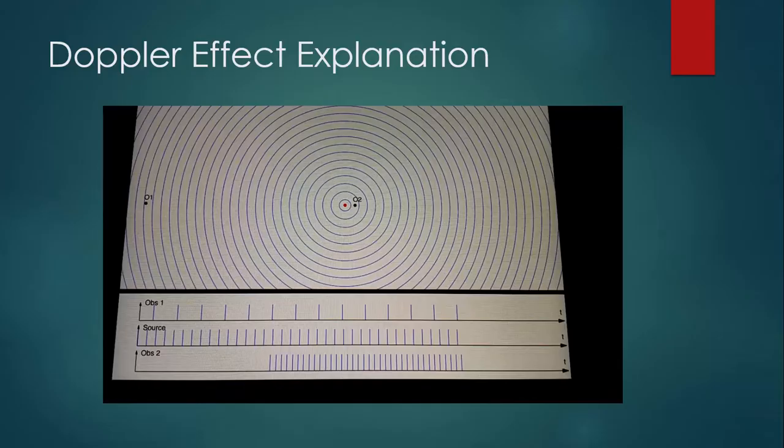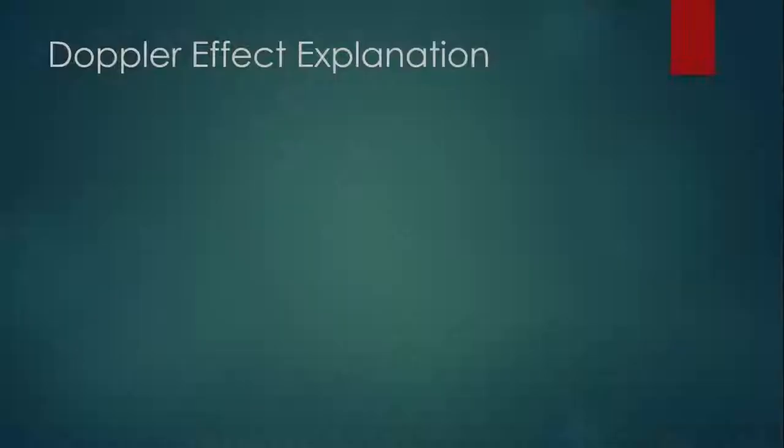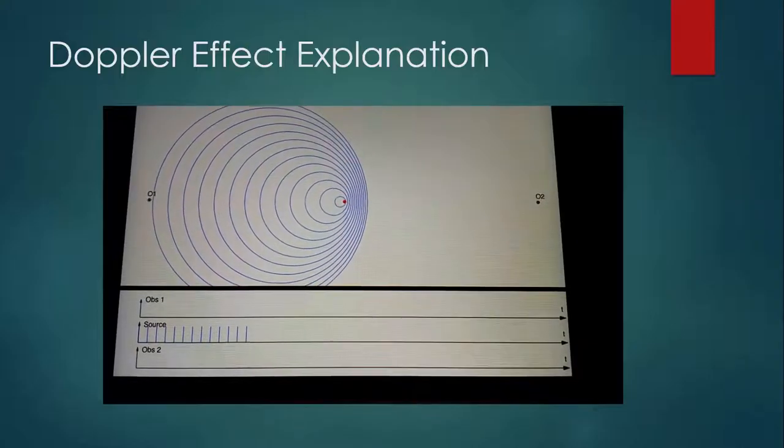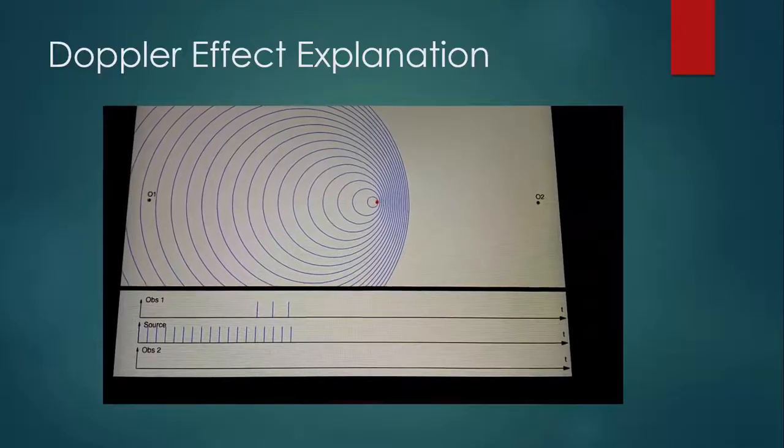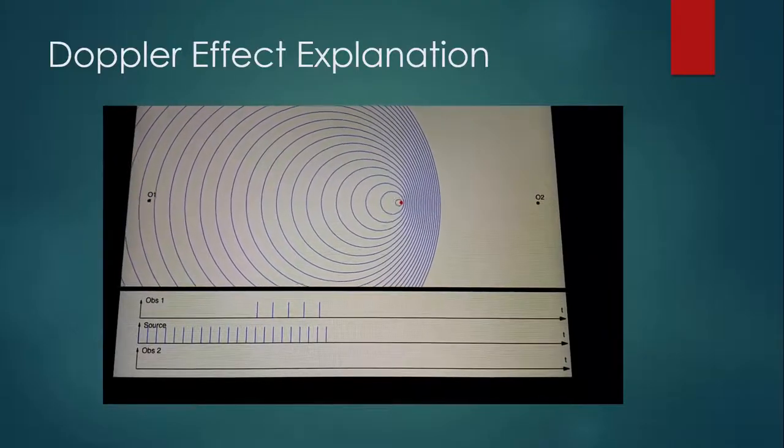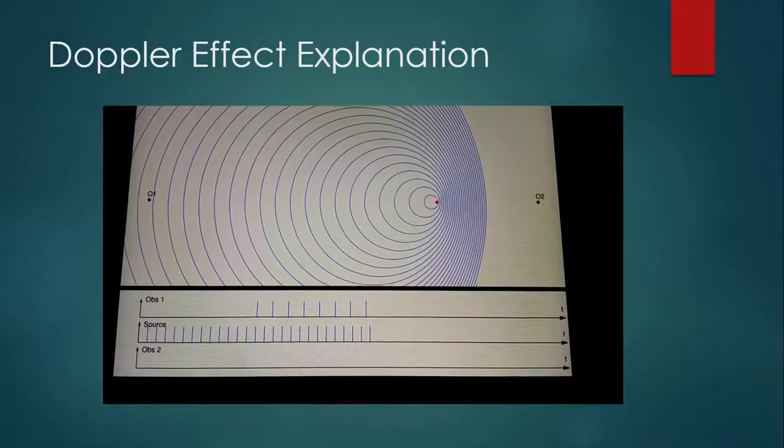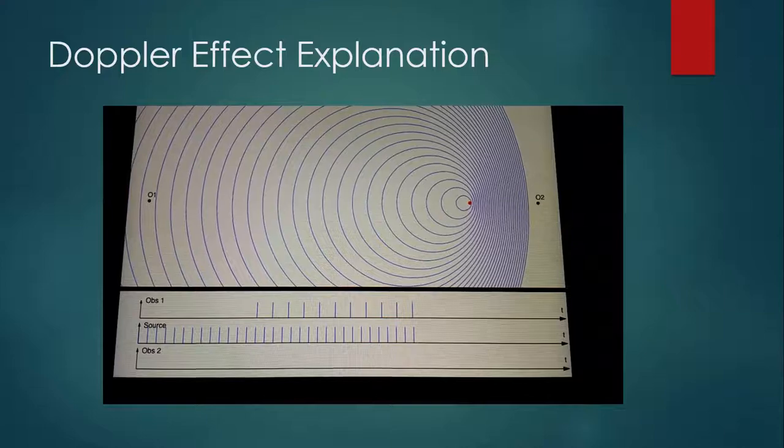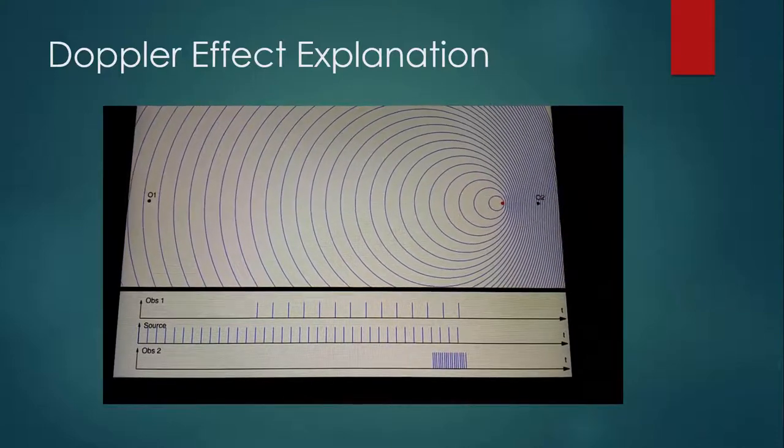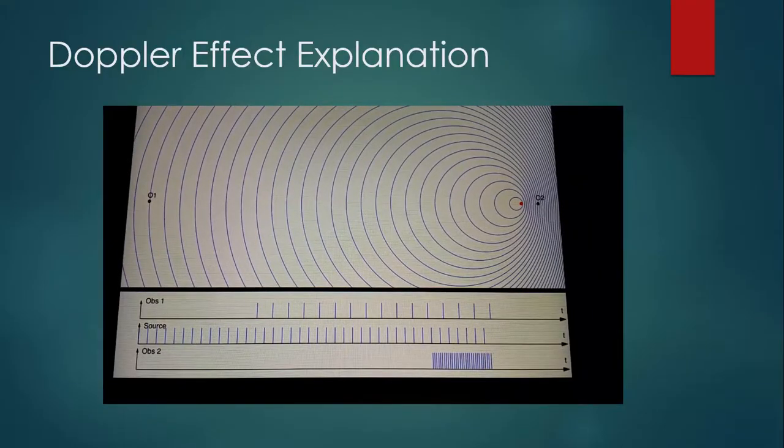Let's take a look at what happens when the source of the sound moves. That's like all those examples we saw with the moving train and the plane and the car. The red dot, once again, is the source, and it's emitting these waves at a constant frequency. But since it's moving to the right, the compressions on that side kind of get bunched up, and the compressions behind it kind of get stretched out. And so you can see that Observer 1 intercepts those compressions less frequently than they are emitted, and Observer 2 gets them much more frequently than they are emitted.